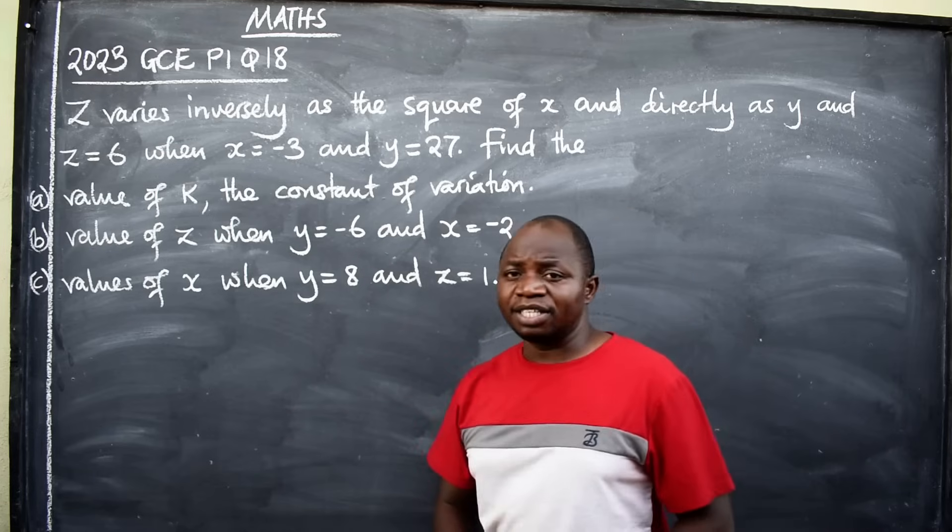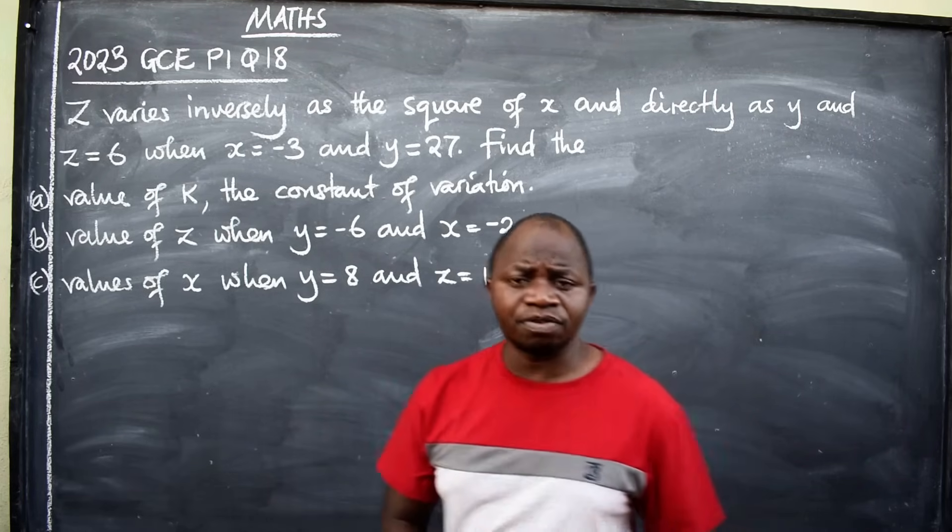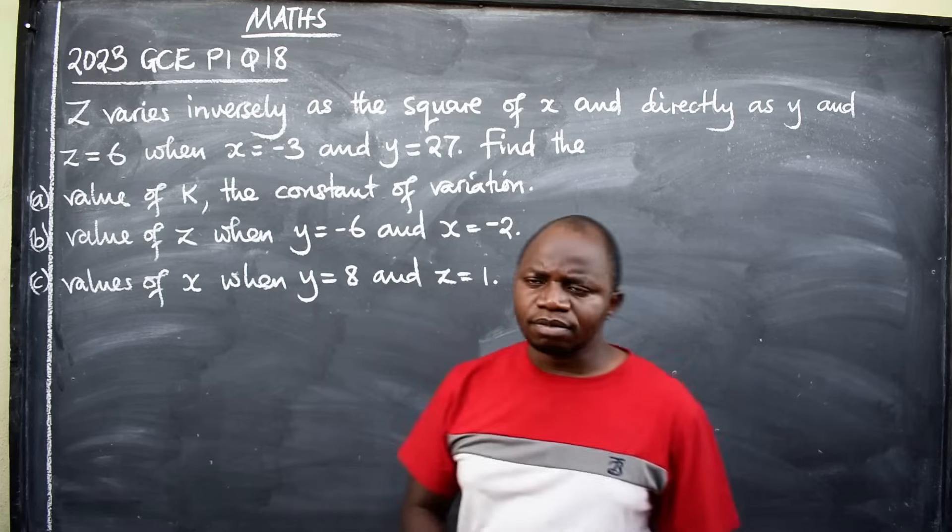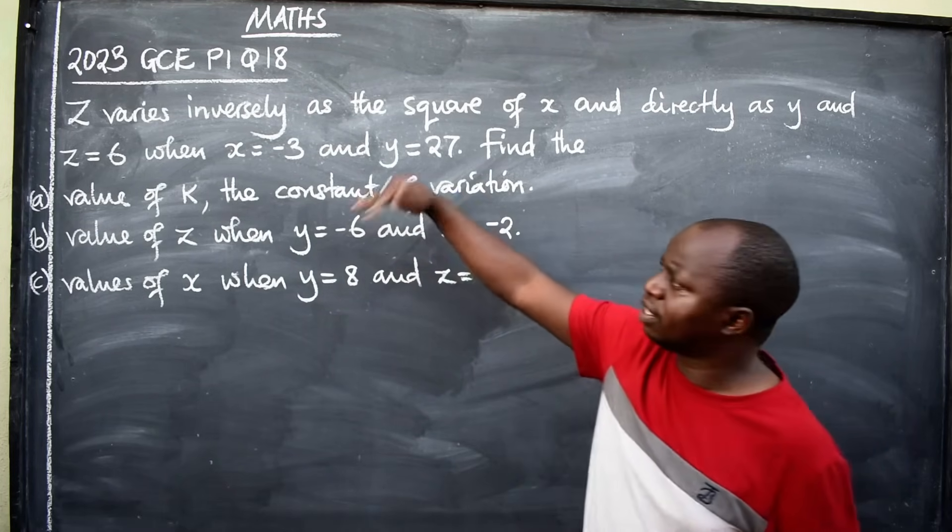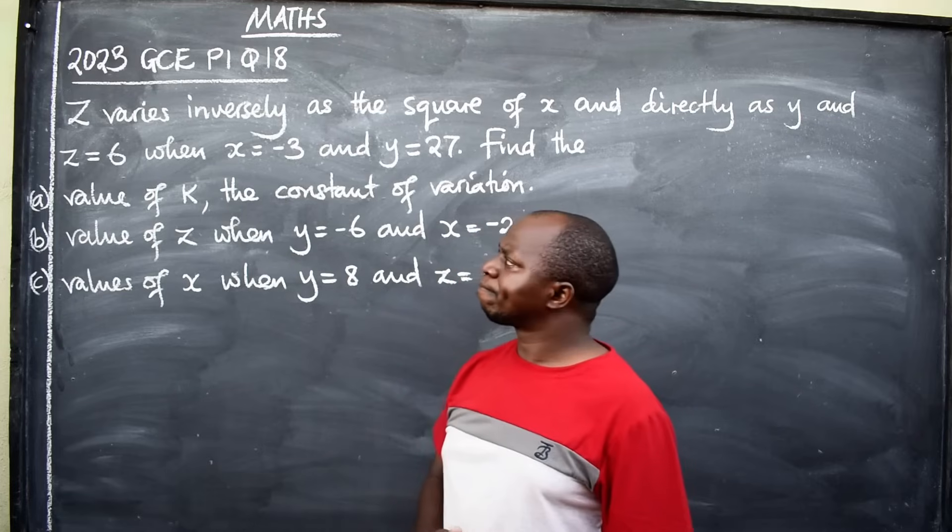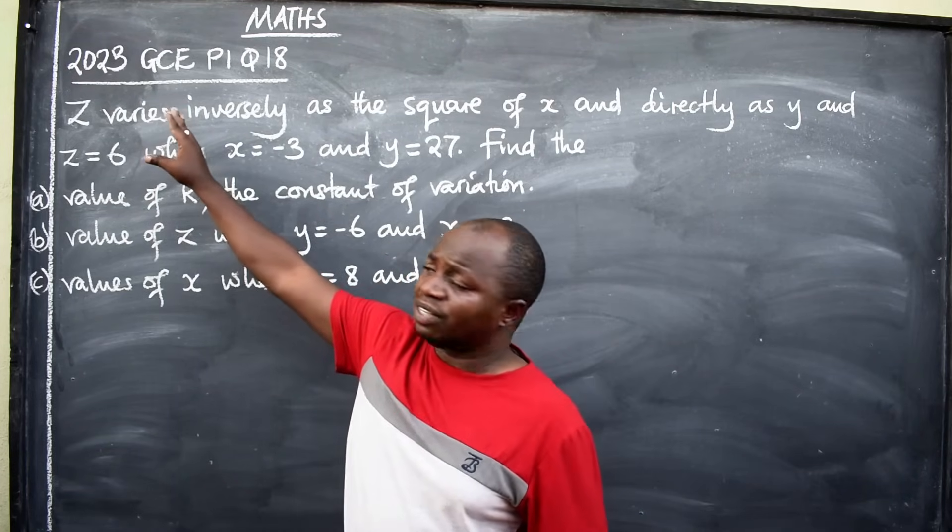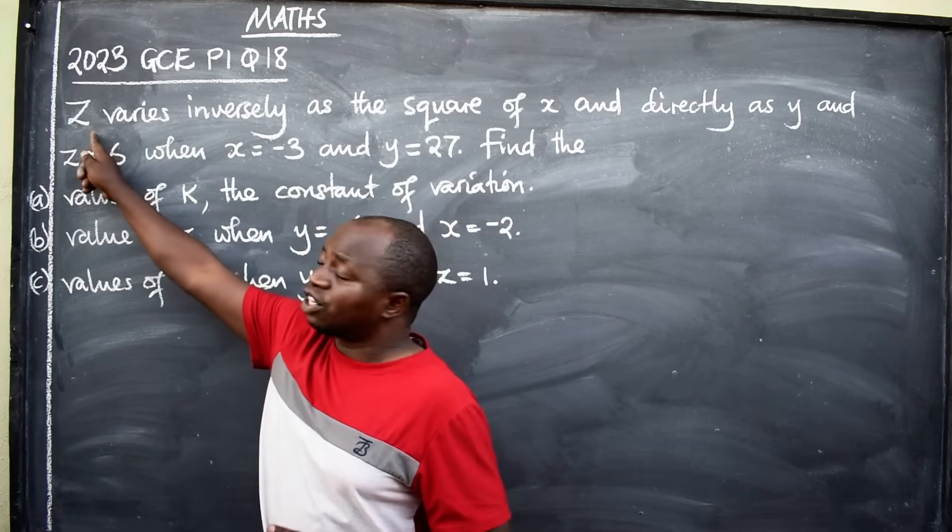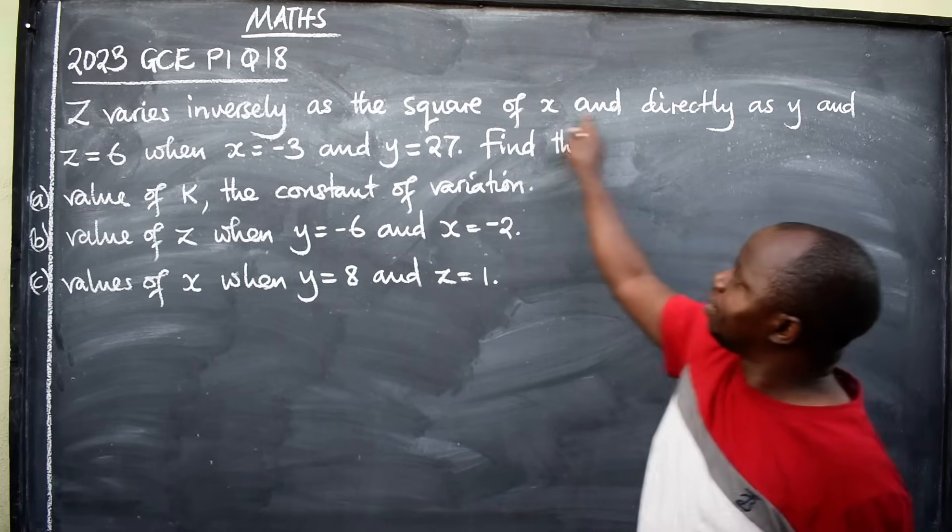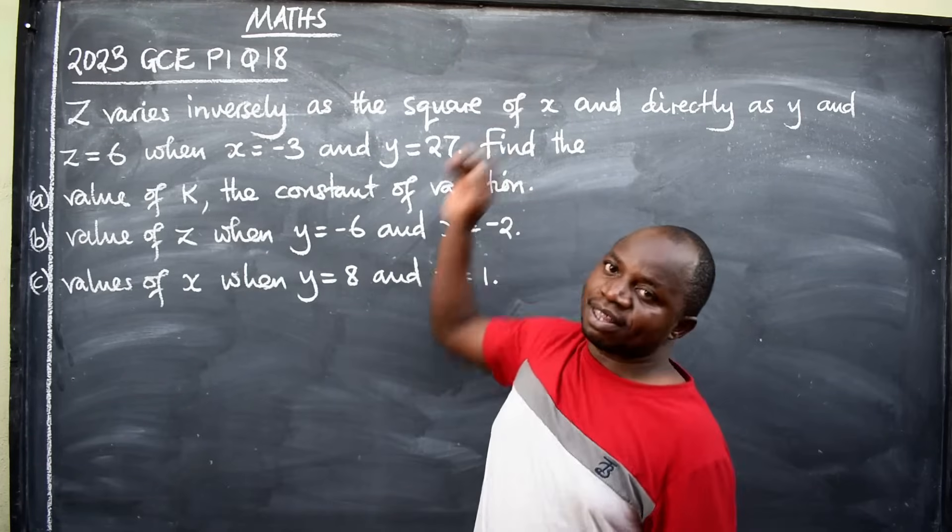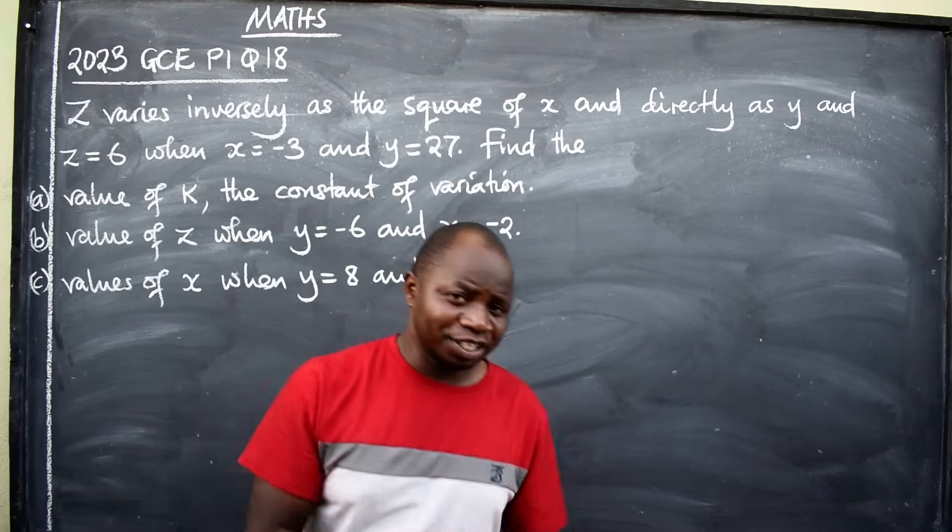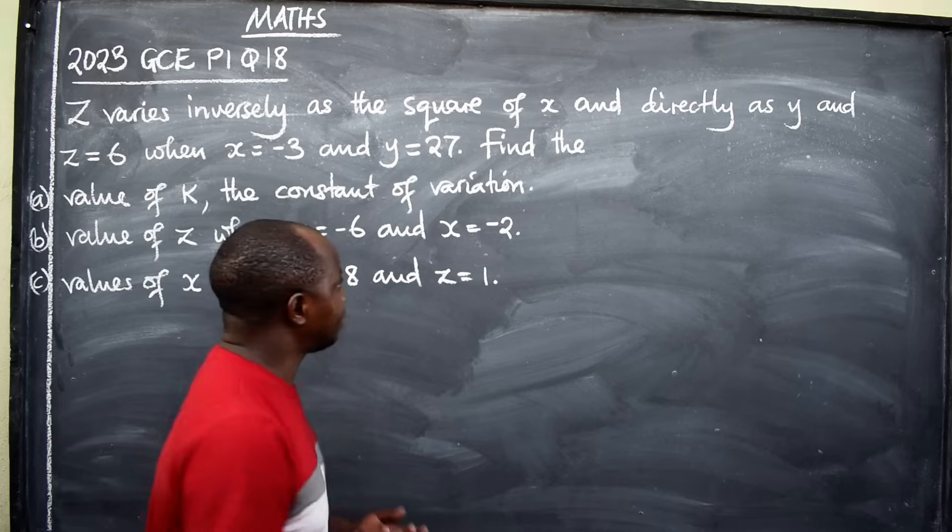Well, the topic is called variation. We have different types of variation: direct variation, inverse, joint variation, and partial. Looking at this question, it's a combination of inverse and direct variation. The first thing that you need to understand is variation. There is this translation that you have to do from this statement to mathematical language. Be careful and pay attention so that you learn the way to translate.